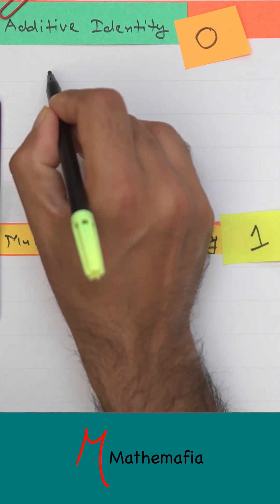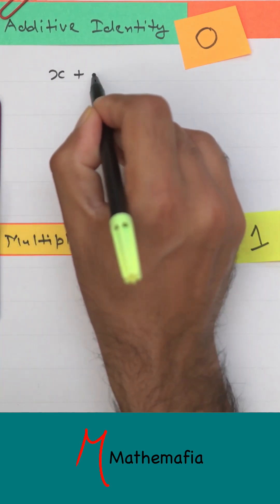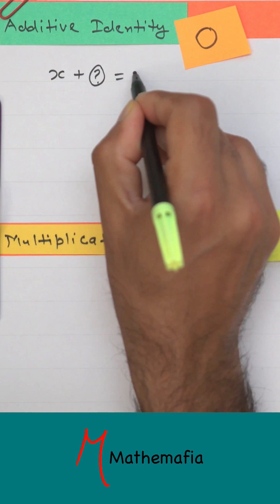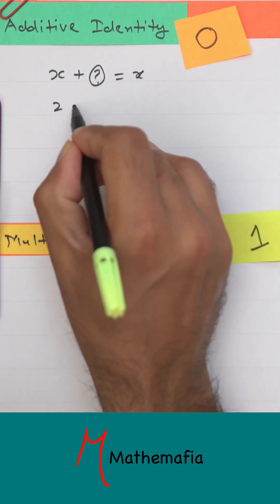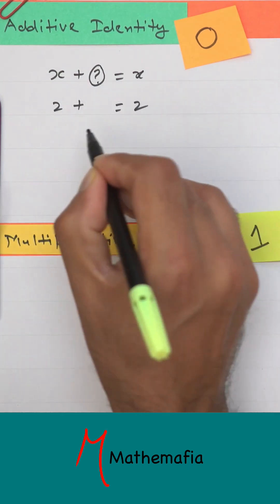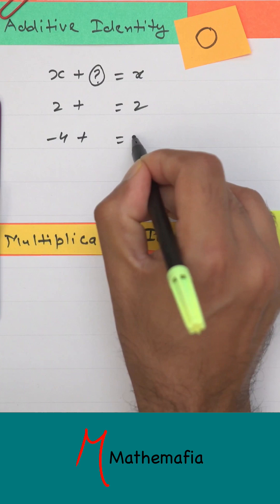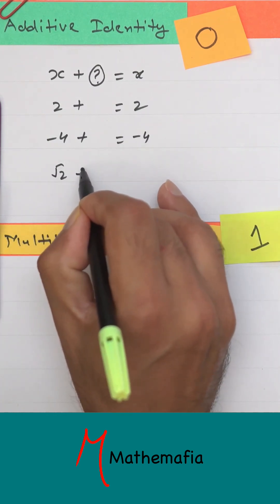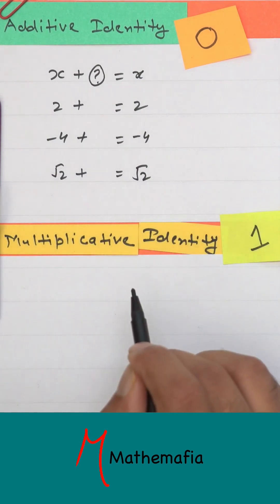Additive identity means if I have a number, say x, then what should we add to x so that we get x again? For example, what should we add to 2 to get 2? What should be added to -4 to get -4? What must be added to √2 to get √2 as a result?